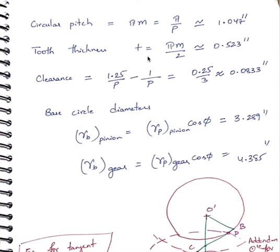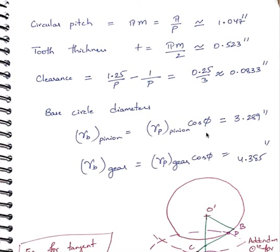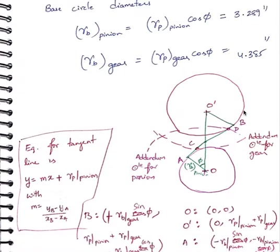Tooth thickness is half the circular pitch, giving 0.523 inch. Clearance equals dedendum minus addendum, coming out to 0.0833 inch. Base circle diameters equal the pitch circle diameter times cos(φ), where φ is the pressure angle. The base circle diameter for the pinion is 3.289 inches and for the gear is 4.385 inches.